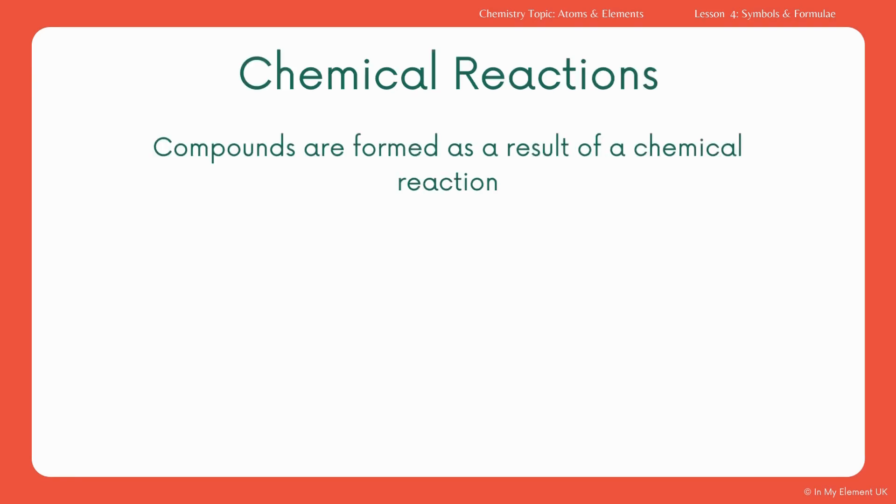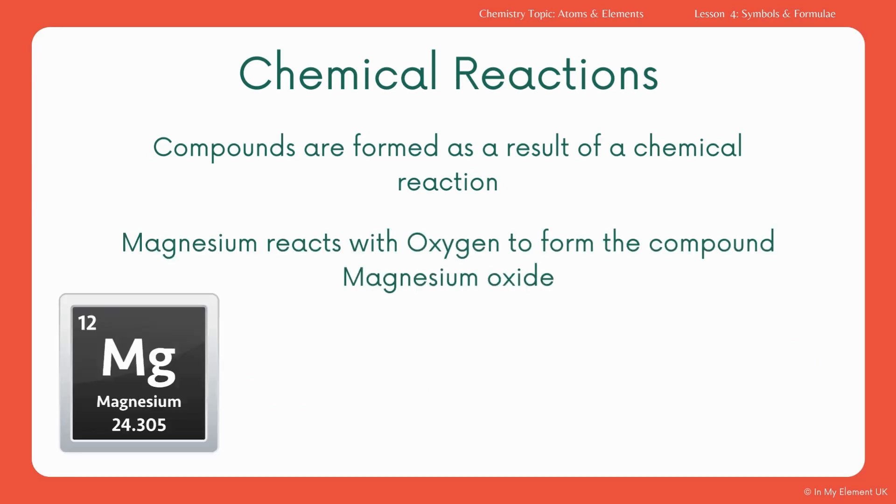Now, these compounds are formed as a result of the chemical reaction, and we need to be able to write the equations. So, for example, magnesium reacts with oxygen, and it forms the compound magnesium oxide. A really simple way of writing this is in a word equation. So magnesium is a reactant, oxygen is a reactant, and the product that it forms is magnesium oxide. That's your word equation, just to represent your chemical reaction.